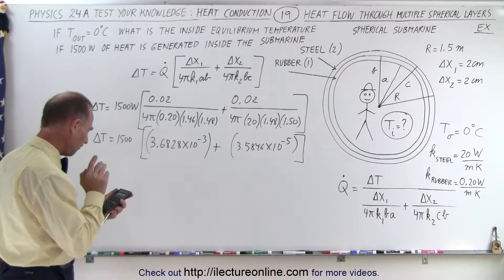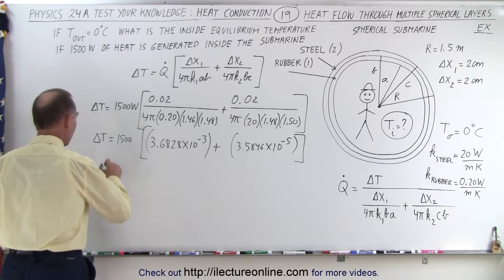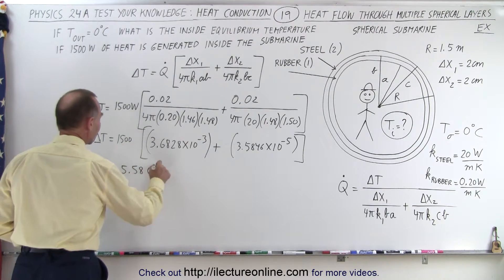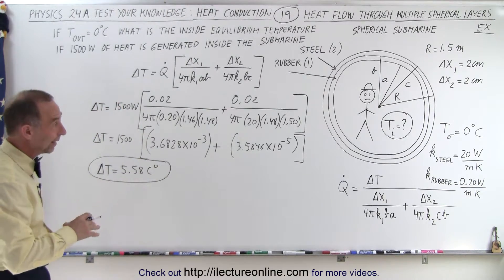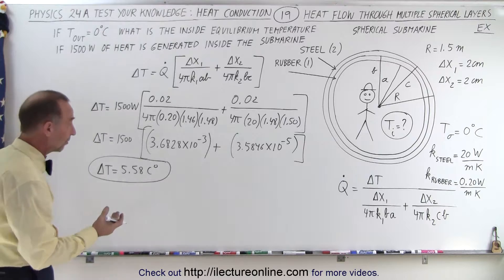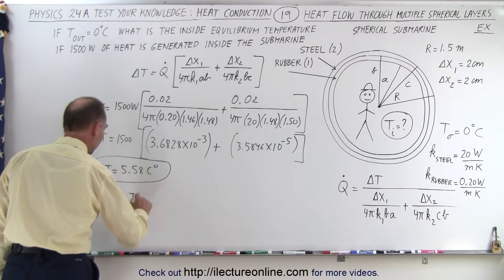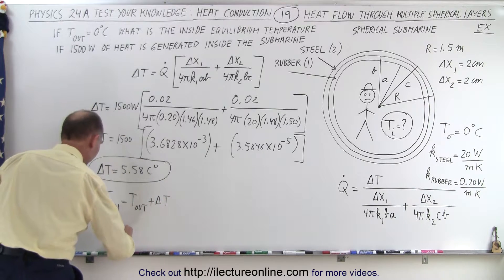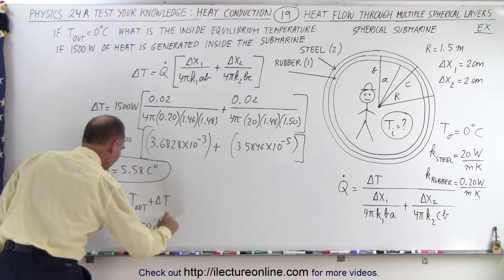Equals 5.58 centigrade degrees. So the delta T is equal to 5.58 centigrade degrees. That's the difference in the temperature between the inside and the outside, and since the outside is 0 degrees centigrade, then T on the inside is going to be T on the outside, plus the difference in the temperature. So therefore, T on the inside is going to be 5.58 centigrade degrees.